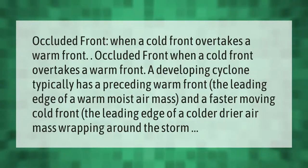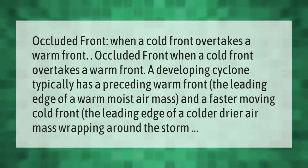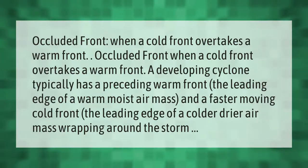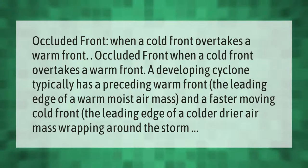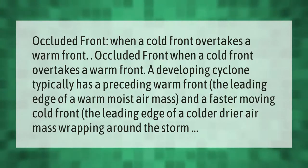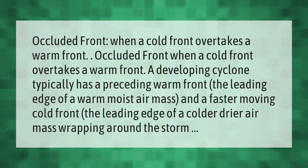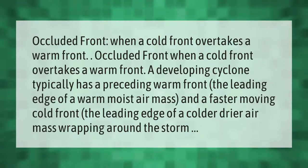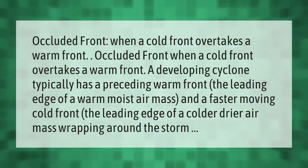An occluded front occurs when a cold front overtakes a warm front. A developing cyclone typically has a preceding warm front — the leading edge of a warm, moist air mass — and a faster-moving cold front, the leading edge of a colder, drier air mass wrapping around the storm.